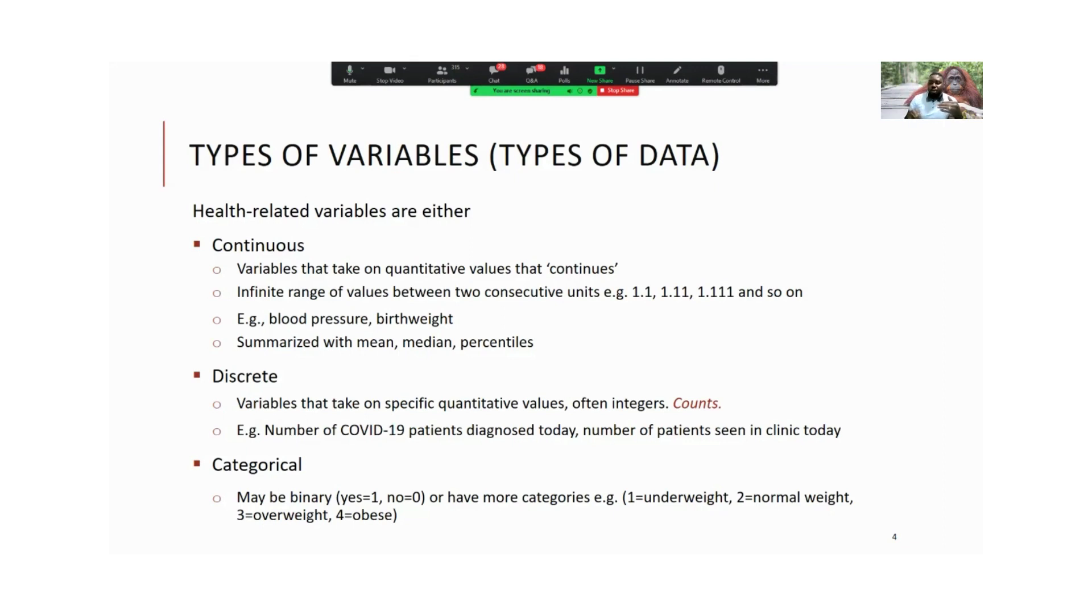But for discrete variables you will not often have decimal places. They're whole numbers, they're integers. I give the example of maybe the number of patients on the ward, the number of COVID patients that were diagnosed today in the country. Then there's a categorical variable which is essentially categories. First of all it might be two categories, so if it's two categories then that's binary. But if it's more than two categories then we often just describe it as categorical. We'll talk about categorical variables in more detail in the next moment.